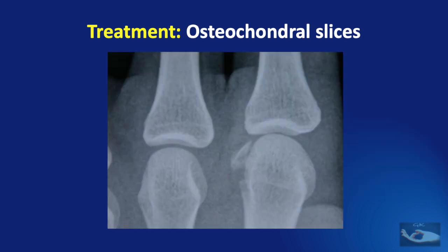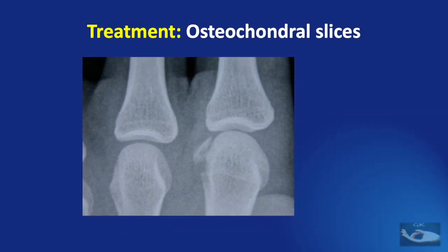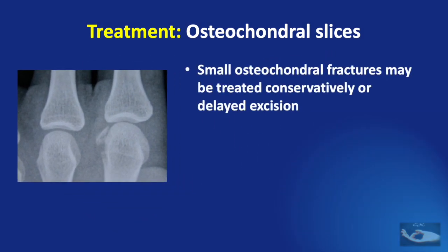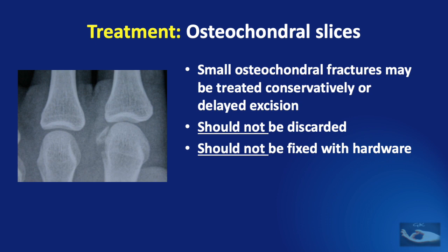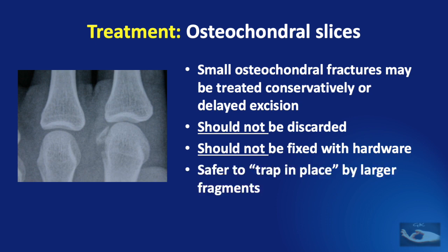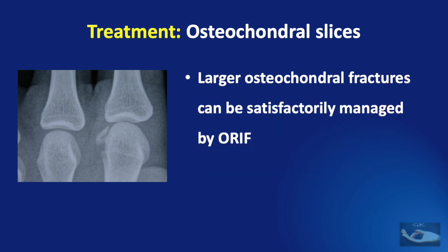Osteochondral slices are fractures where a slice of bone along with part of the articular cartilage is separated. Small osteochondral fractures may be treated conservatively; these slices should not be discarded primarily nor fixed individually with hardware — it is safer to trap them in place using larger fragments. Larger osteochondral fractures, however, can be satisfactorily managed by open reduction and internal fixation.